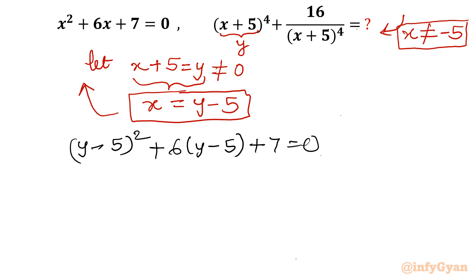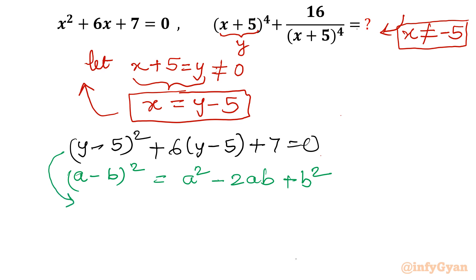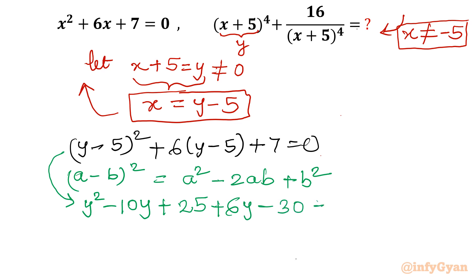Now we apply the algebraic identity (a − b)² = a² − 2ab + b². So (y − 5)² expands to y² − 10y + 25. Adding 6(y − 5) gives 6y − 30, plus 7, equal to 0.